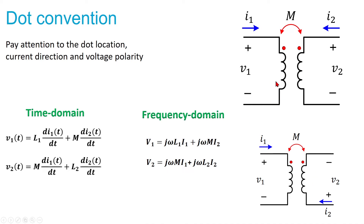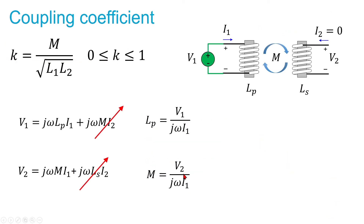So for two coupled inductors we have these equations. Now, the coupling coefficient is defined as mutual inductance divided by the square root of L1 times L2. The coupling coefficient is between 0 and 1.